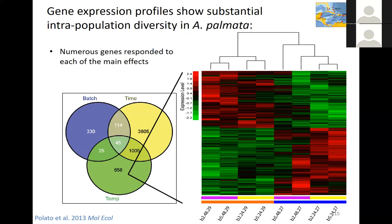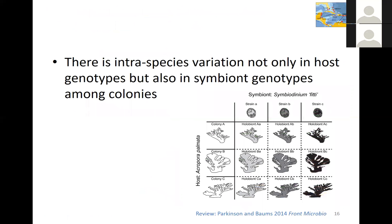In this differential gene expression experiment, there were many genes differentially expressed with time due to development, but there were also distinct batch effects — different batches expressed genes differently and interacted with temperature differently. This was important because we knew some parents would produce larvae better able to deal with high temperatures during development, which is important for conservation. We could also find distinct differences in how batches responded — this is batch 2 versus batch 5 at 48 hours and 29°C — differences that became more pronounced over time.